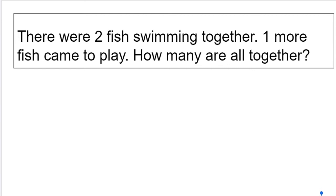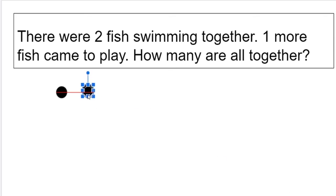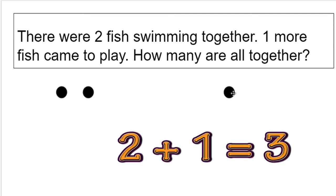Let's quickly look at those same two problems using our shortcut. We don't have to be artists in math class — we're simply going to put a dot to represent all objects in our math stories. The story said there were two fish swimming together, one more fish came to play, how many are there all together? Instead of fish, I'm going to use dots: one dot, two dots. One more came. Now we count the dots: one, two, three. Three fish all together.